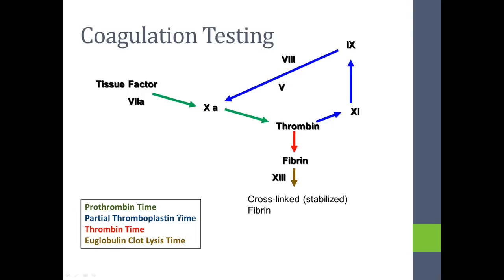The partial thromboplastin time measures the amplifying process. The classical reasons for partial thromboplastin time problems are deficiencies of factor VIII or factor IX; factor XI deficiency can also cause it. These enzyme deficiencies produce a prolonged partial thromboplastin time.